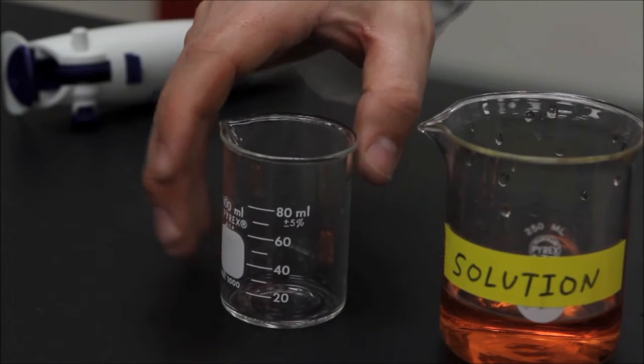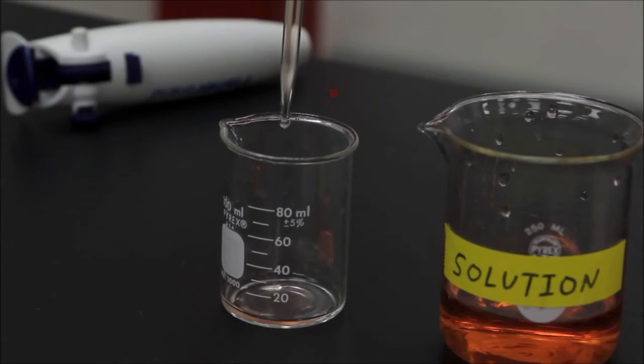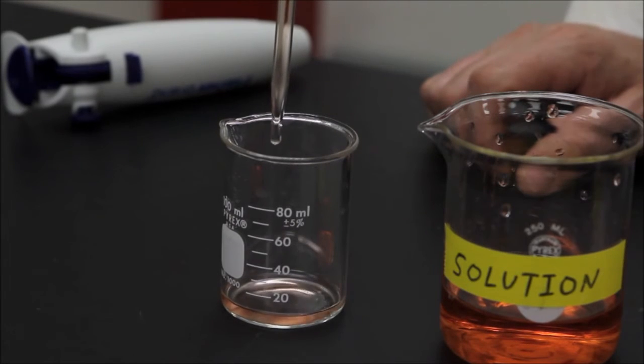Next, hold the pipette over your destination container and release your thumb to allow gravity to drain the liquid. Finally, touch the pipette tip to the inside of the container to dispense any half drops.